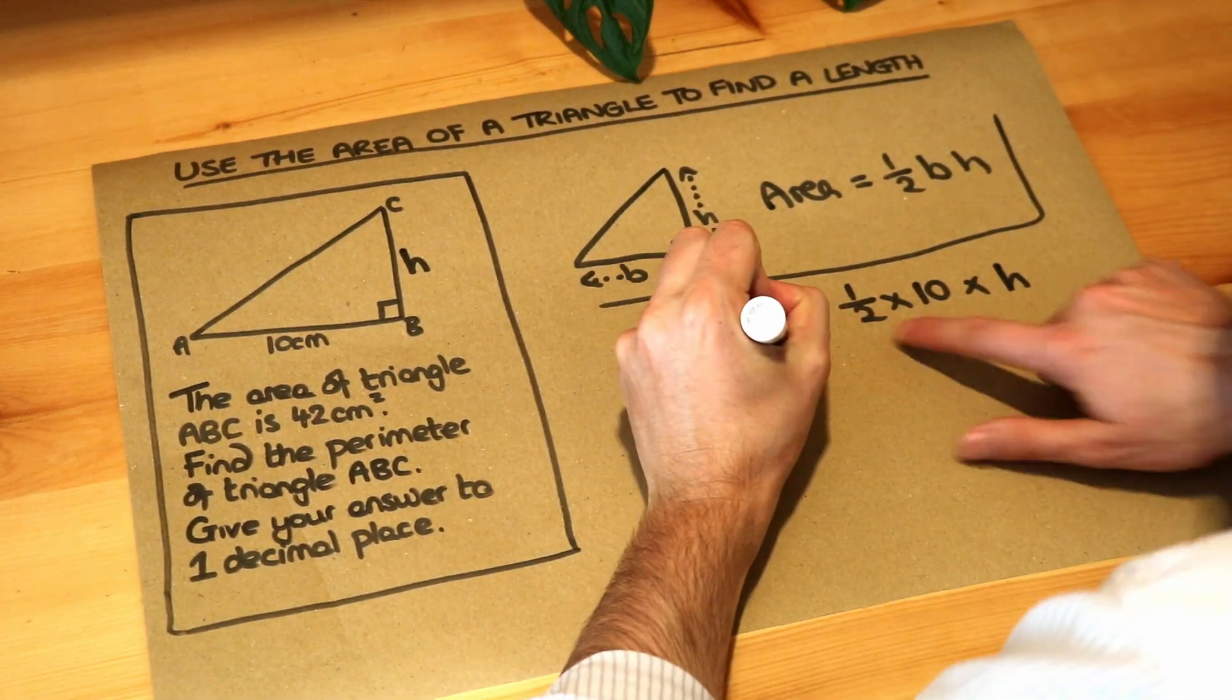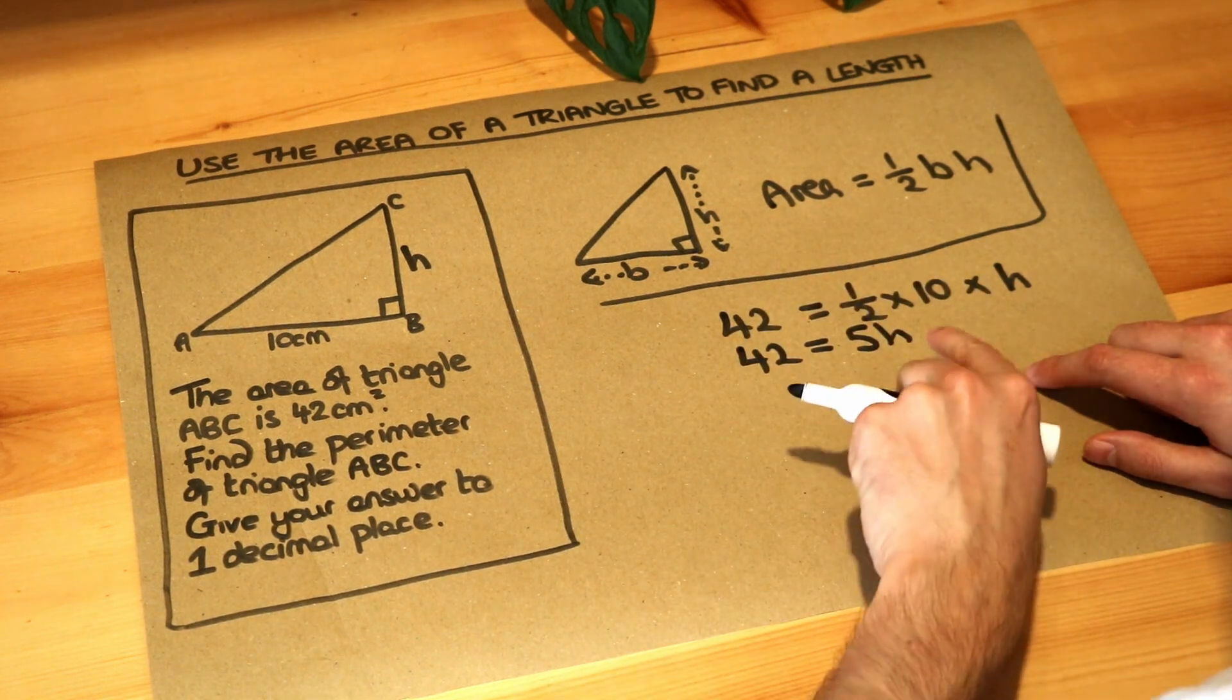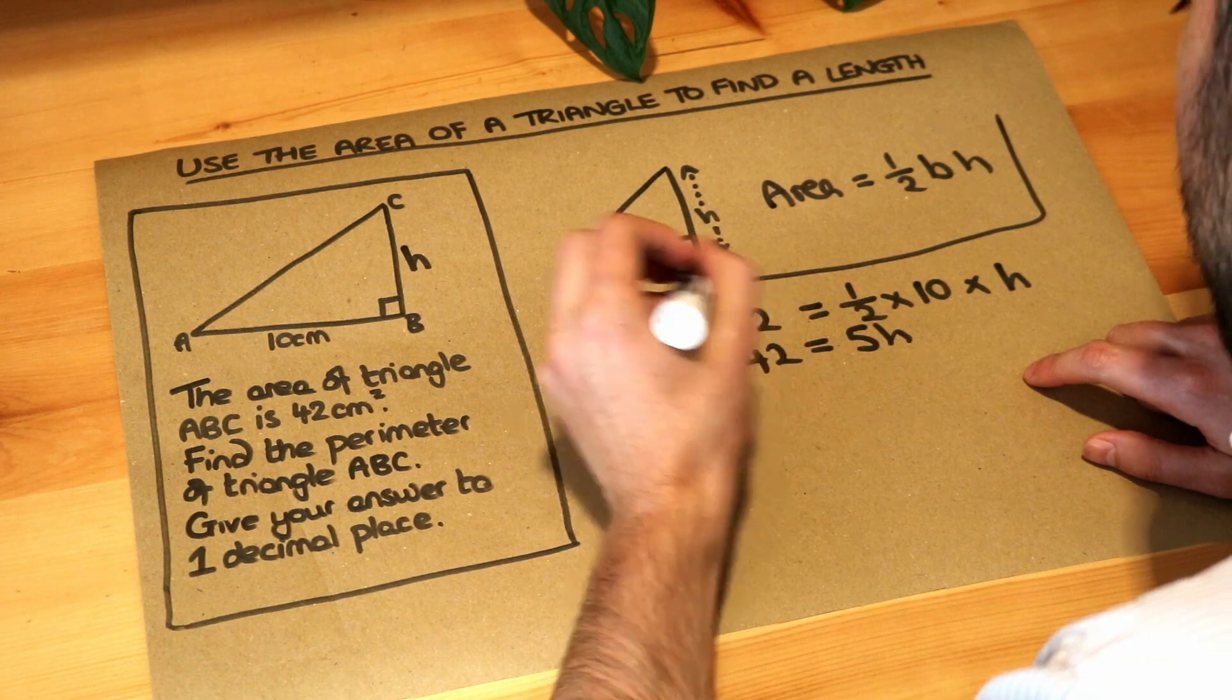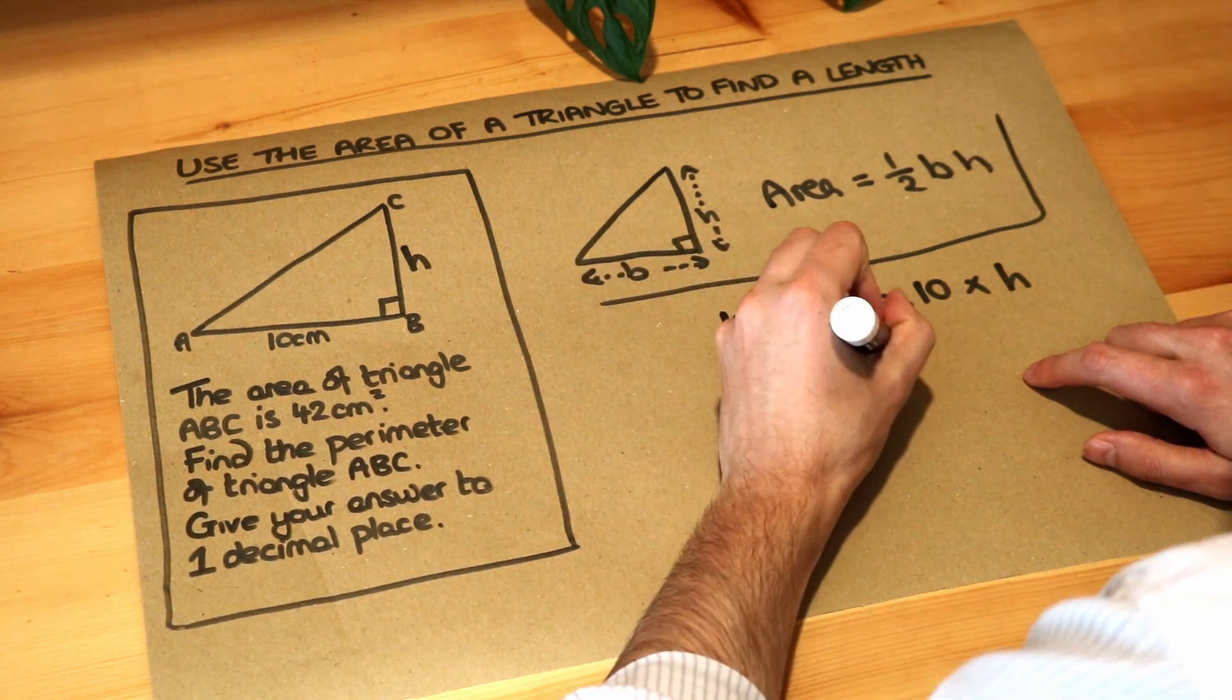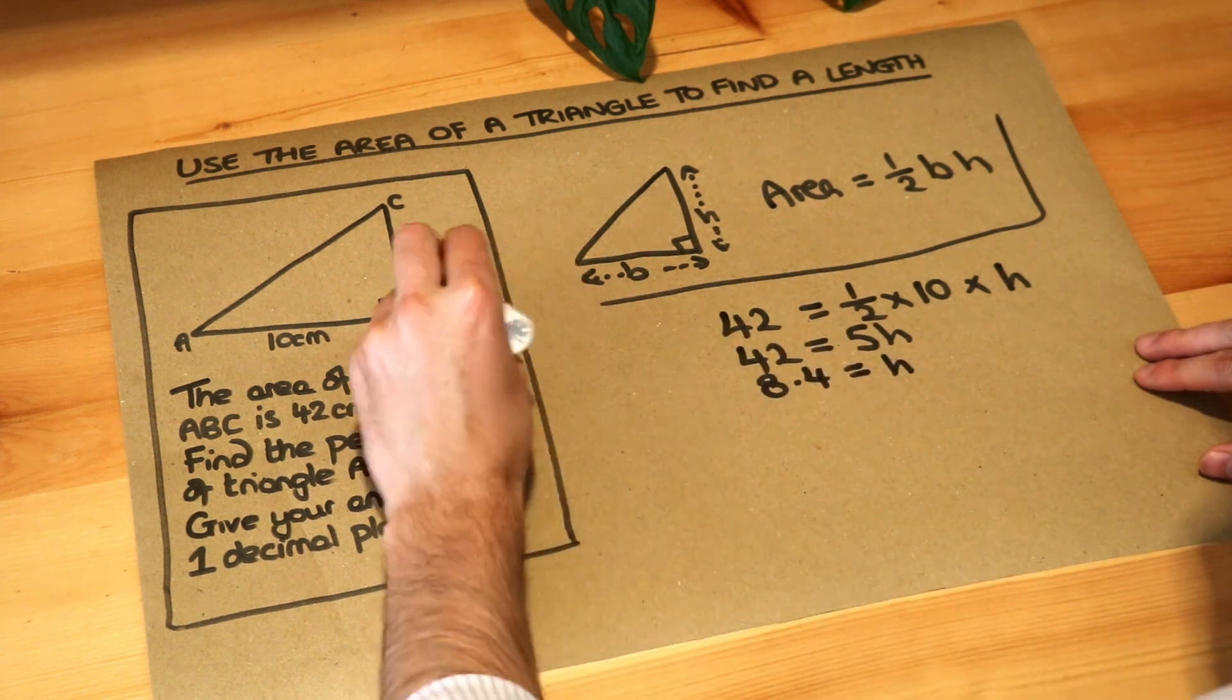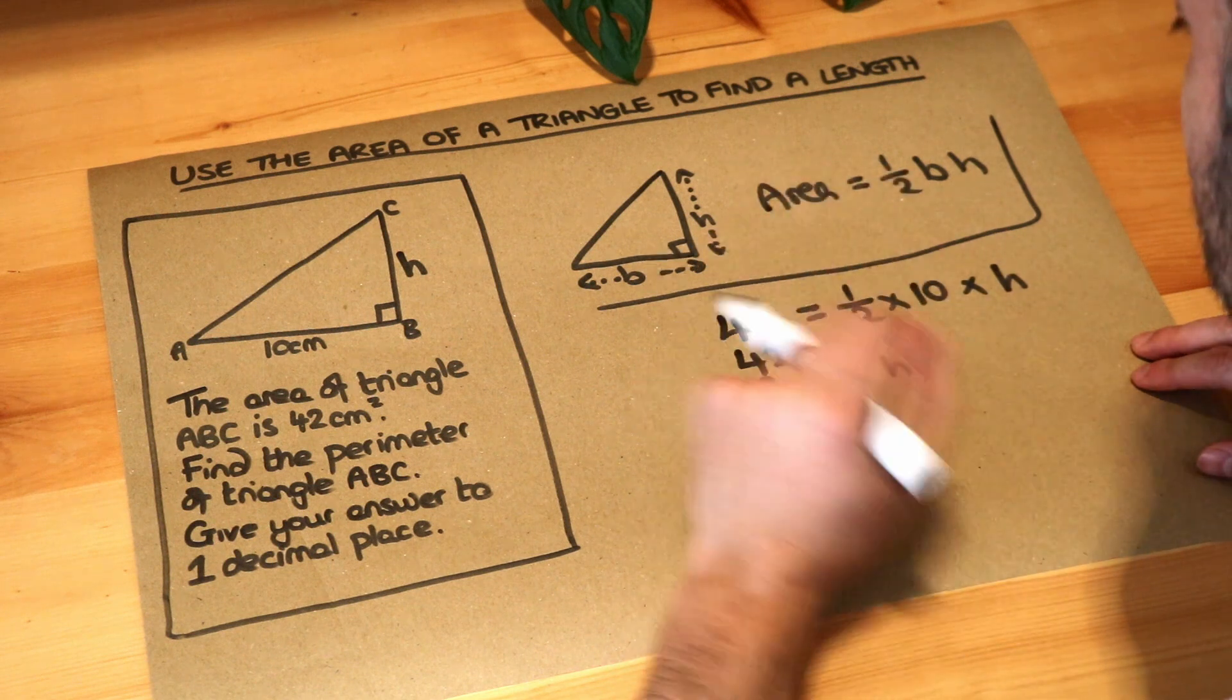Let's simplify this a bit. Half times 10 is 5, so we've got 5H, 5 lots of H, and then we can divide both sides by 5. That gives you 8.4, if I do it in my head, is equal to H. So we know that the height of this triangle is 8.4 centimetres. I'm not going to put the unit in until the end.